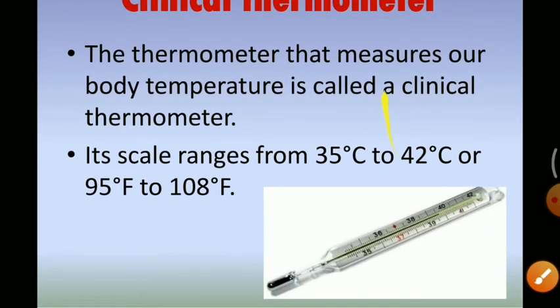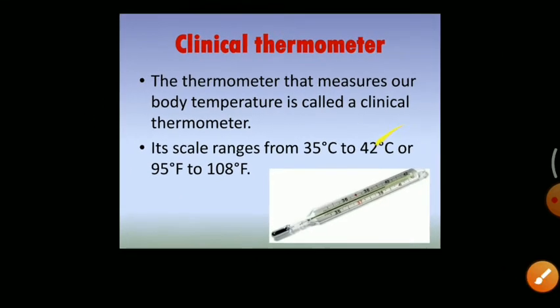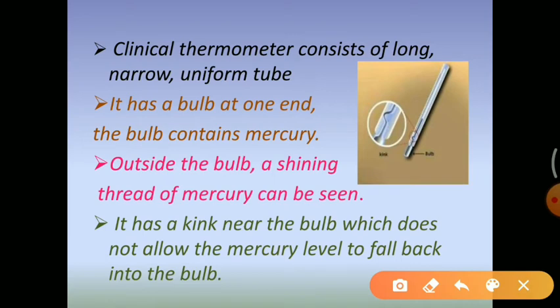Now look at this picture — it's a picture of a clinical thermometer. Let's discuss what are the different characteristics of a clinical thermometer. It consists of a long, narrow, uniform glass tube. It has a bulb at one end, and that bulb contains mercury in it.